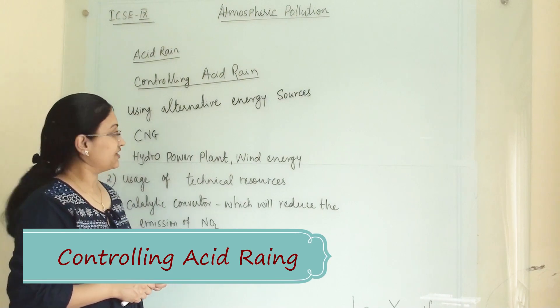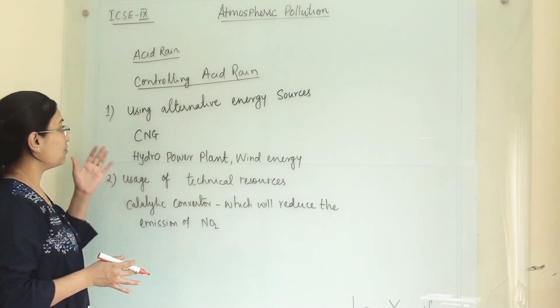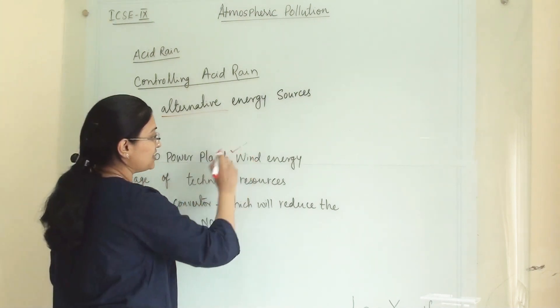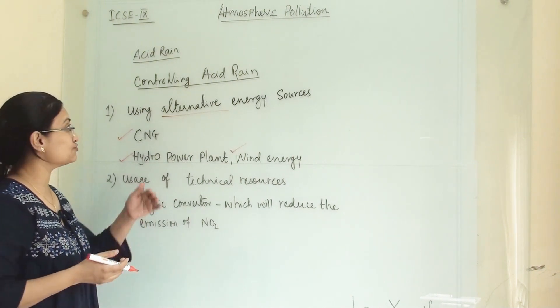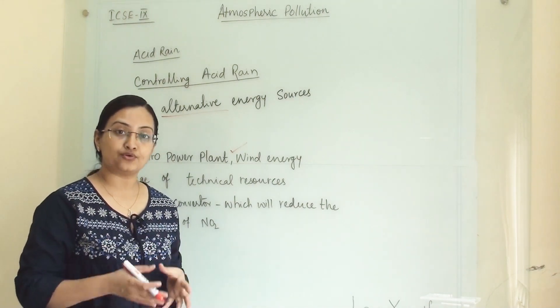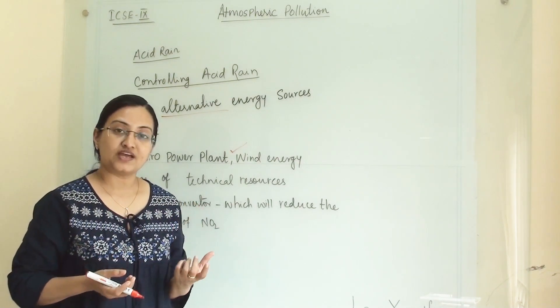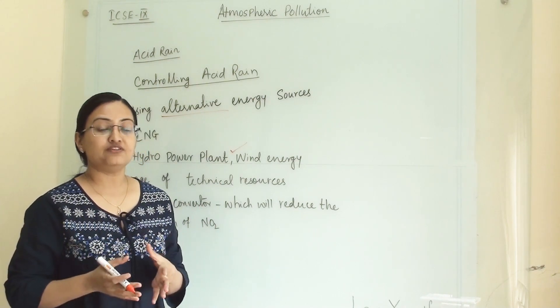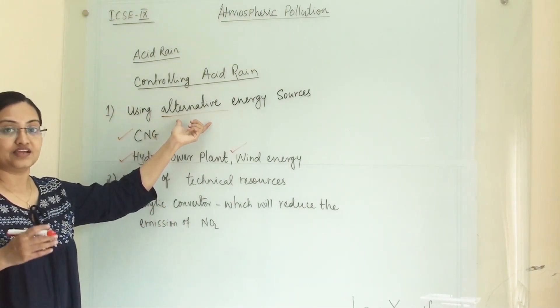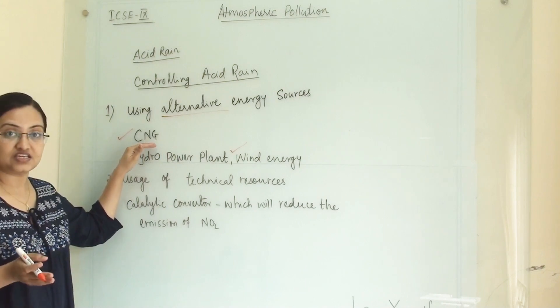Now we will see how to control acid rain. By using alternative energy sources, we can control acid rain. What are the alternative energy sources? CNG, hydropower plant, and wind energy. Some renewable resources will help us reduce acid rain. All the energy sources like petrol, diesel, petroleum products, and fossil fuels, when we burn them, they will definitely emit the oxides of carbon and oxides of sulfur. If we want to reduce those, we have to use alternative energy sources and renewable energy sources which are hydropower plant, wind energy, and CNG-like sources.